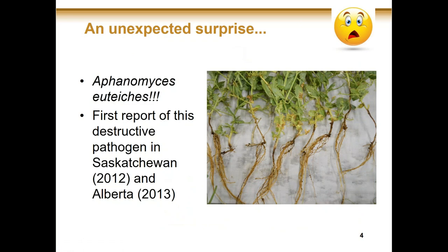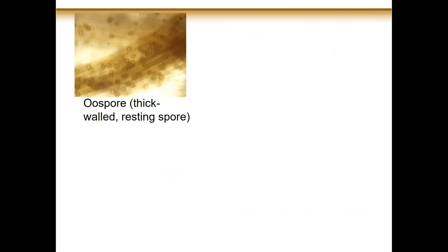I'm going to start by talking about Aphanomyces eutyches, which by now has become a household name for anyone that grows pulses. This was kind of our unexpected surprise — in about 2012 in Saskatchewan and 2013 in Alberta, we really started to pay attention to this pathogen, and that is when we first reported it in these provinces. So what makes this such a damaging and destructive pathogen, and why was it suddenly present everywhere we looked in a lot of pea and lentil crops? To understand that, we have to look at the biology and understand the disease cycle. It's a little bit unusual because the pathogen falls into a group called the water molds.